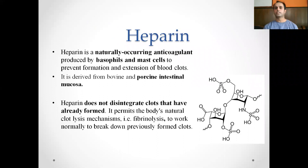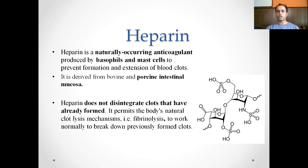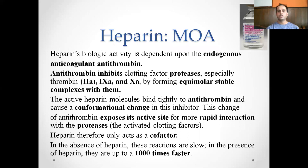Heparin is a naturally occurring anticoagulant produced in basophils and mast cells to prevent formation and extension of blood clots. It is derived from bovine and porcine intestinal mucosa. Heparin obtained from porcine intestinal mucosa is considered superior to that from bovine sources. Heparin does not disintegrate already-formed clots — thrombolytics or fibrinolytics are needed for that — but it does permit natural fibrinolytic mechanisms to break down previously formed clots.